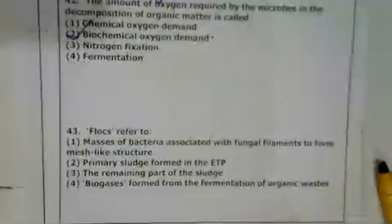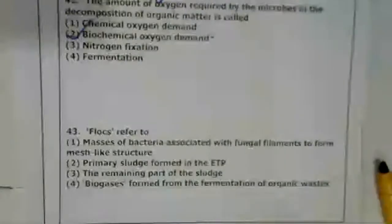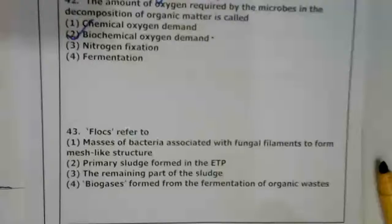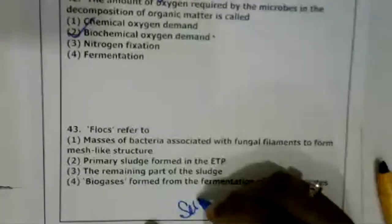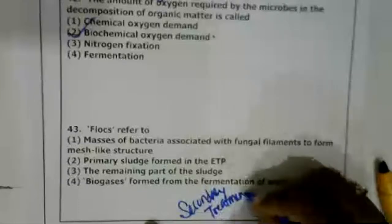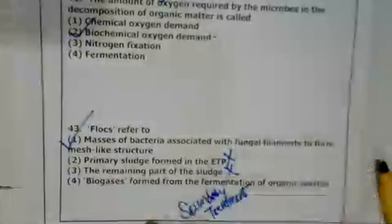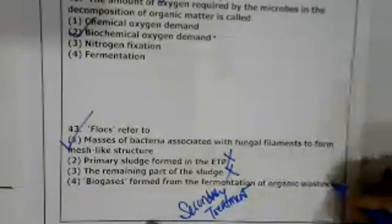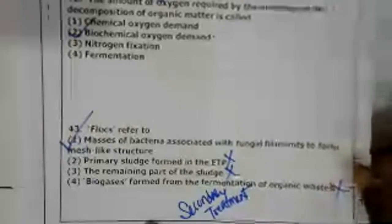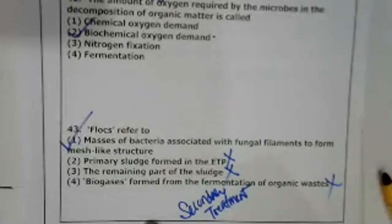Question 43: Flocs refer to what? Flocs are masses of bacteria associated with slime or fungal filaments forming a mesh-like structure, encountered in the secondary treatment process. Option 1 is correct. Primary sludge formed in ETP, remaining part of sludge, and biogas formed from the hole — all other options are wrong.